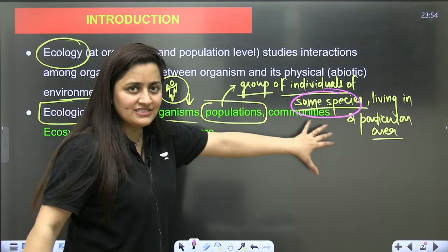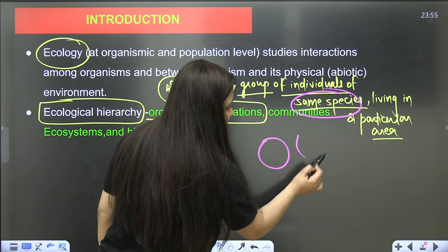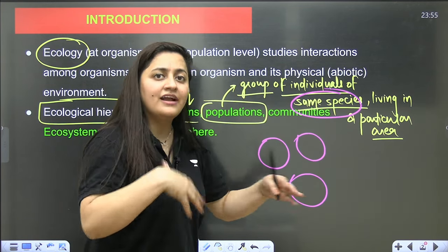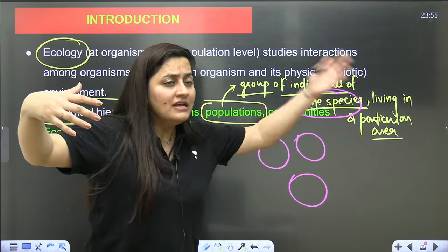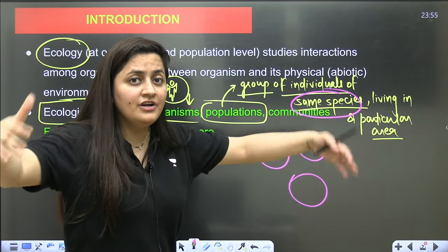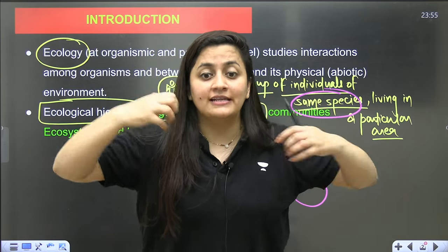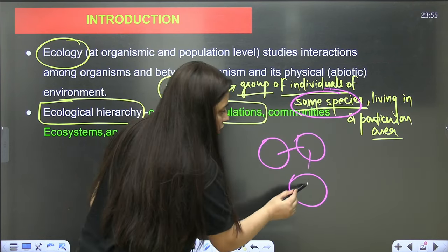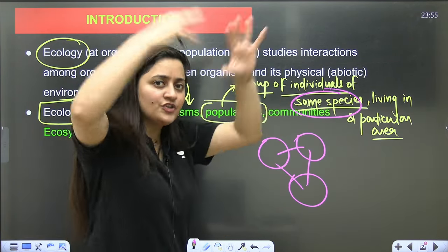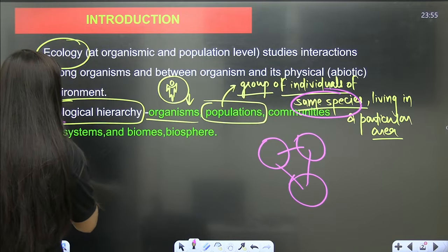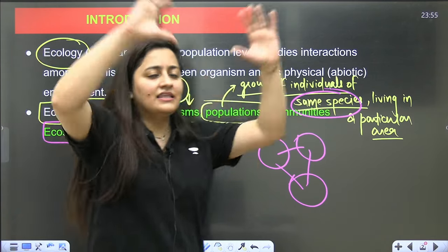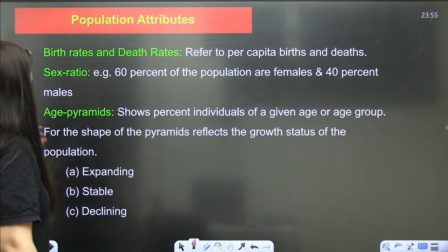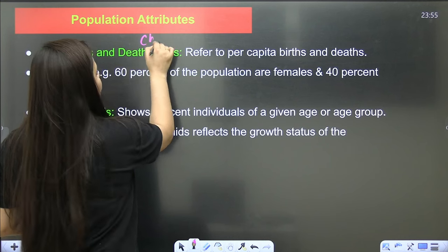Next is the community, where we consider different populations. Humans, dogs, snakes, insects, plants, microorganisms — they all make the community. How they all interact with each other, and their interaction with their surroundings, comes under the ecosystem. Ecosystems together form biomes, and the largest unit is the biosphere.